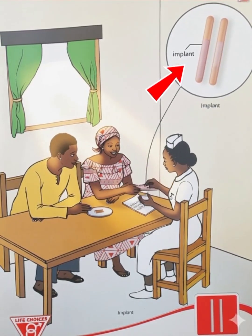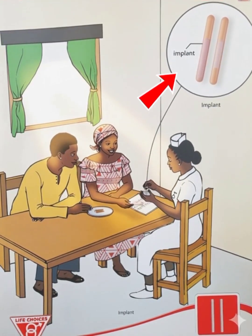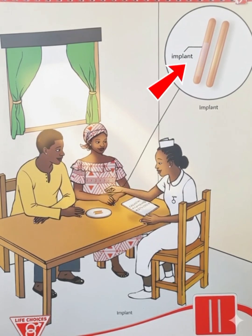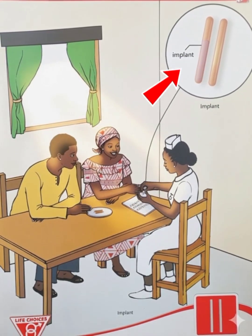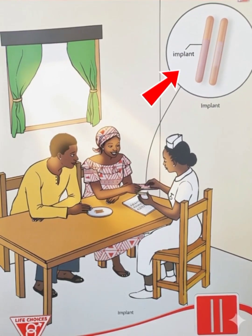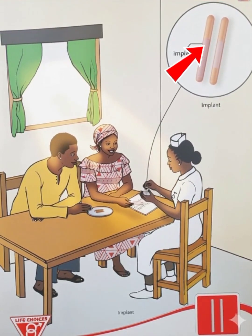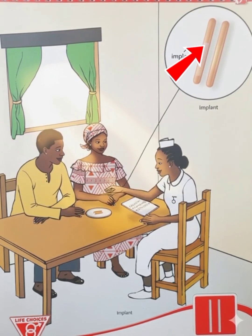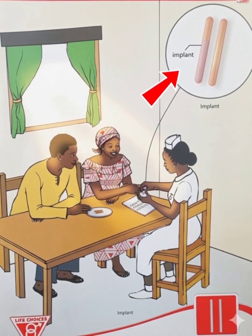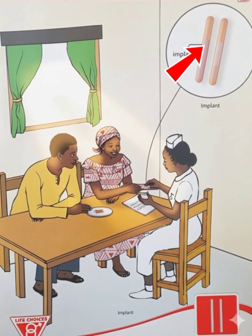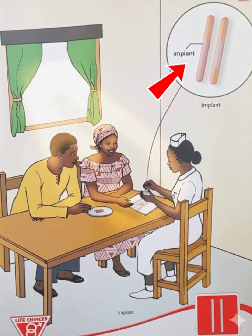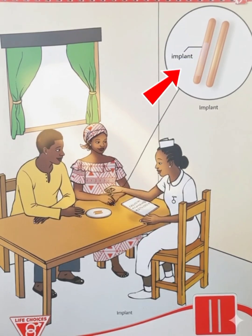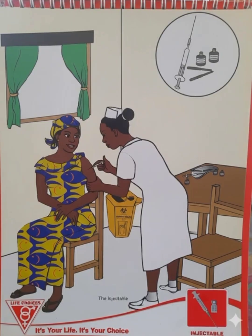The next method is the implant — a thin rod placed under the skin. Its mechanism of action is hormonal. It continuously releases progestin, which stops the ovaries from releasing an egg, a process called ovulation, and thickens the cervical mucus to block sperm.